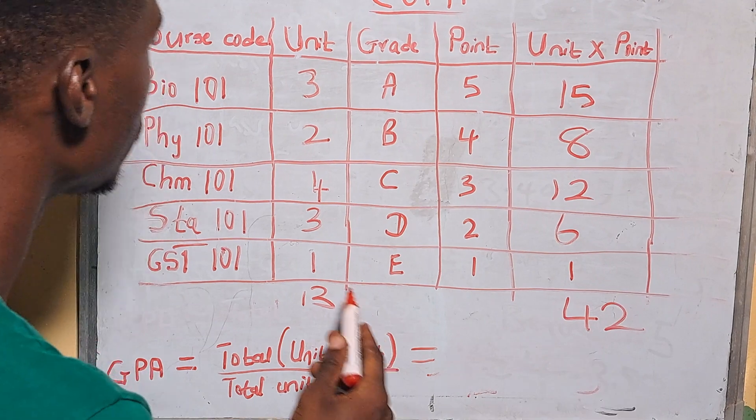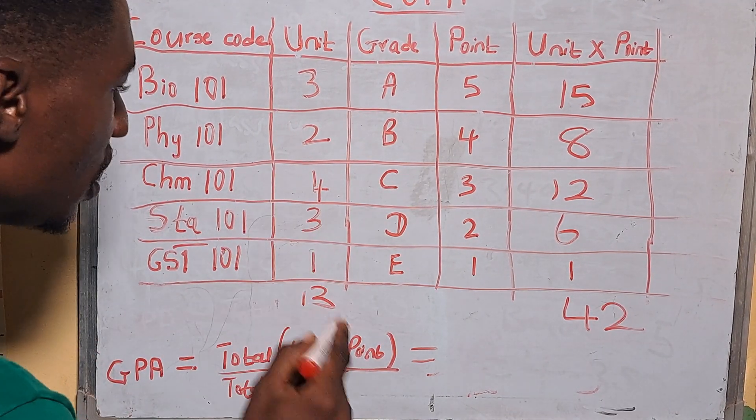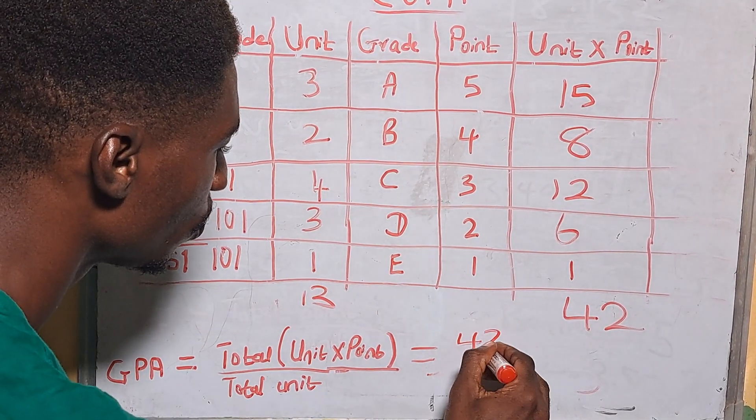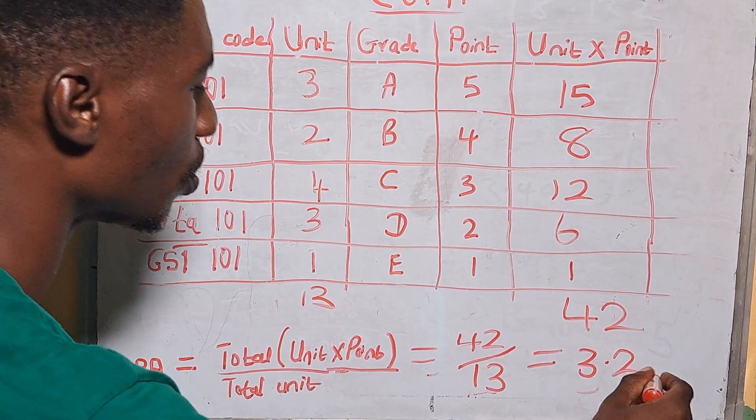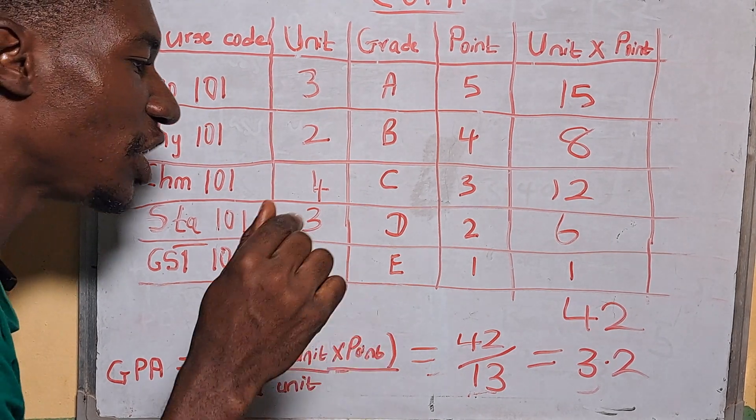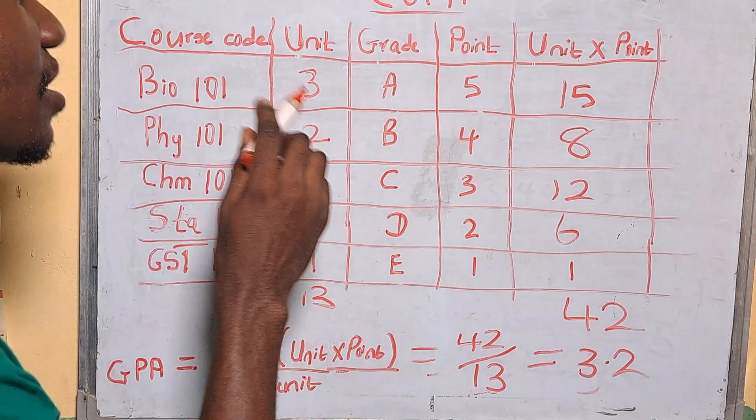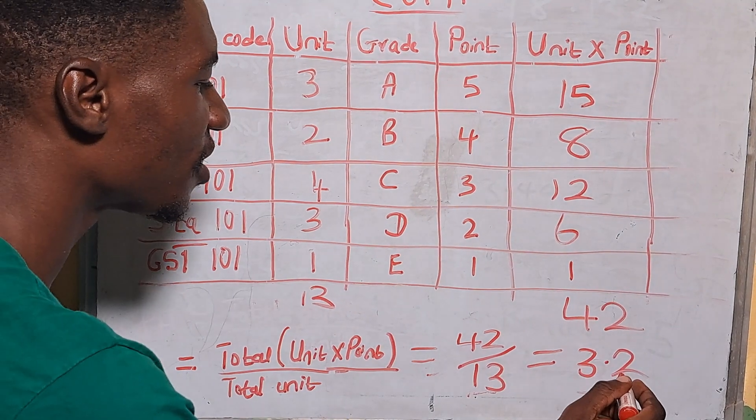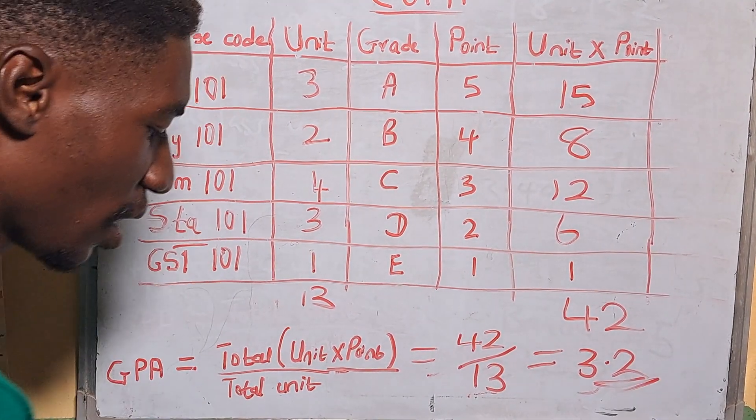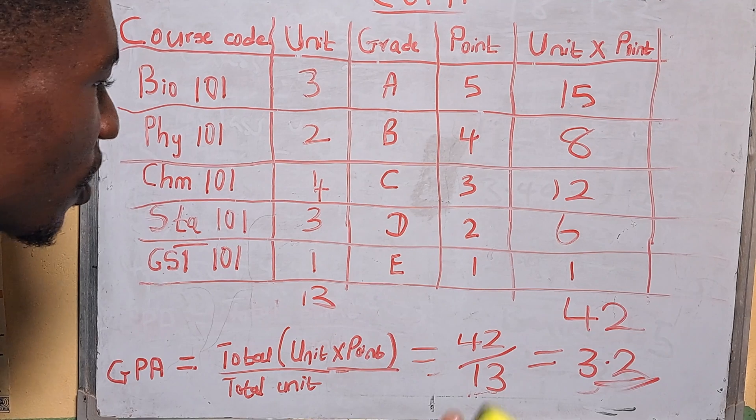So you are going to divide the unit by points by the units. So we have 42 divided by 13 and this is going to give us 3.2. So this means that your GPA for the semester, if this is your first semester result, it means that the GPA for your first semester is 3.2.